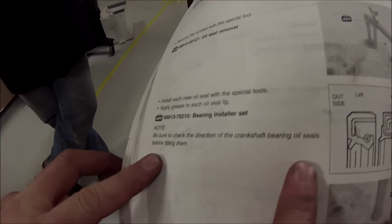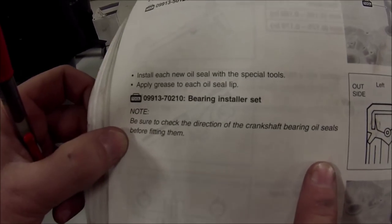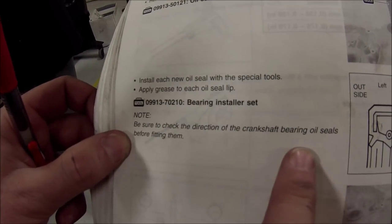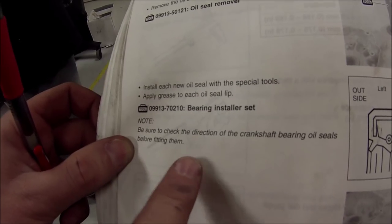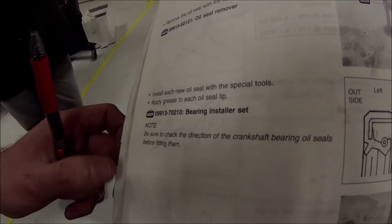If you look at the text, they give us a warning. Be sure to check the direction of the crankshaft bearing oil seals before fitting them. So the warnings are there. We've got to make sure and use them.